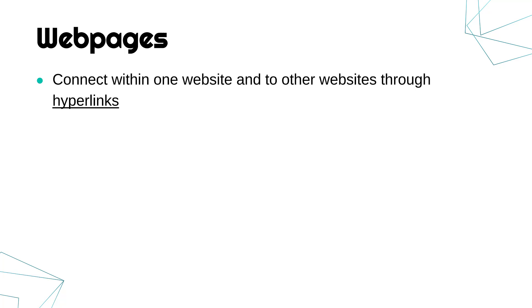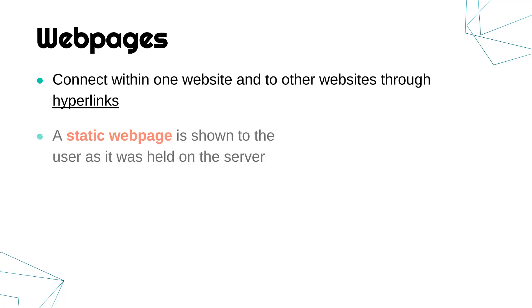Starting with web pages. Web pages are just different sections of a website and they connect within that one website, but also to other websites through hyperlinks. So you click a link on a web page and it might take you to another web page on that website. A website is owned by one entity — one company maybe — but equally some links also take you across to other websites.